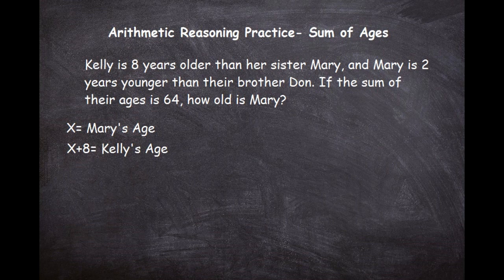The next part says Mary is two years younger than their brother Don. So we know Mary is younger than Don, which means Don is two years older than Mary. Therefore, Don's age would be x plus 2. Mary is two years younger than Don, so Don automatically is two years older than Mary — x plus 2.